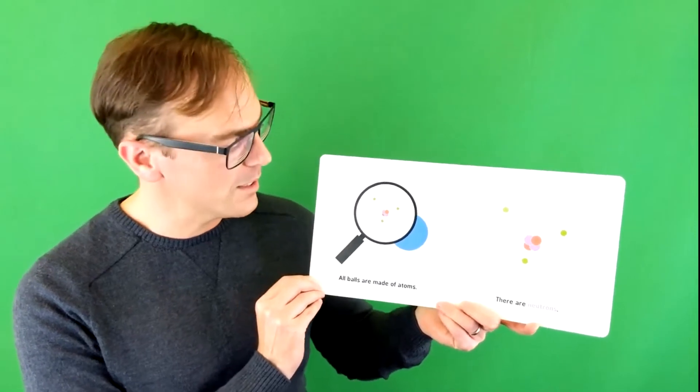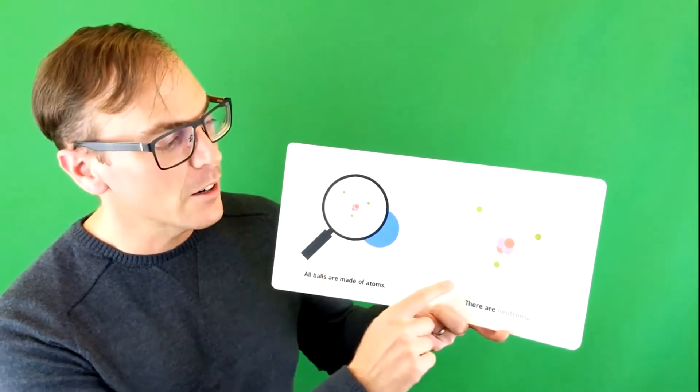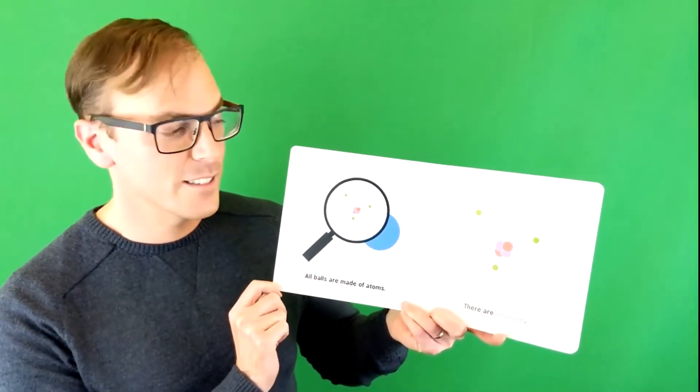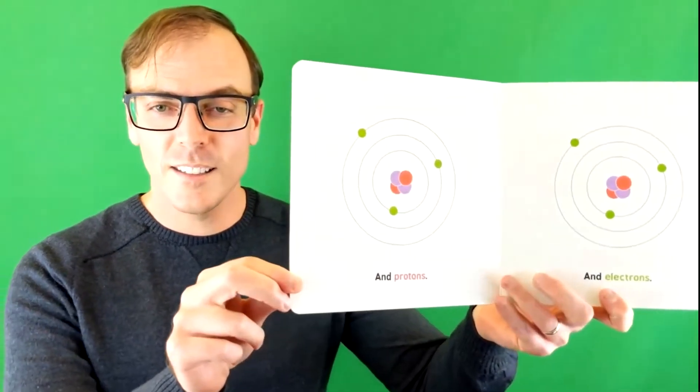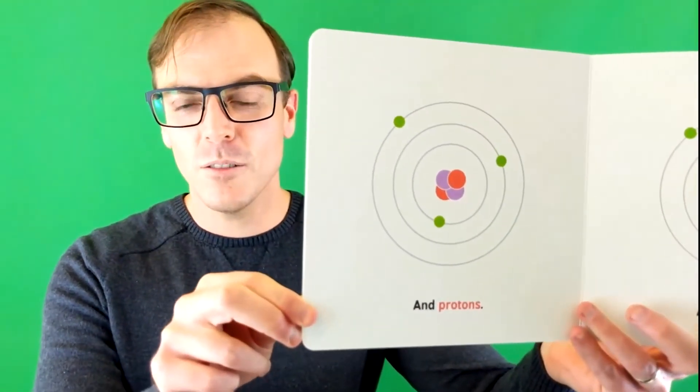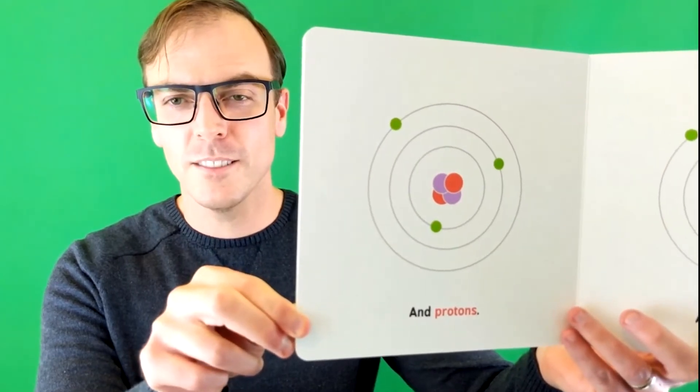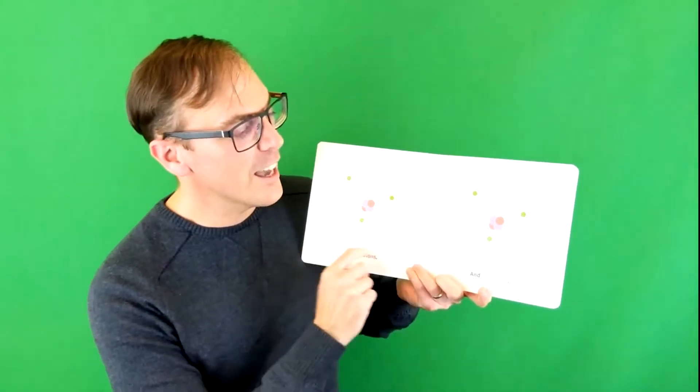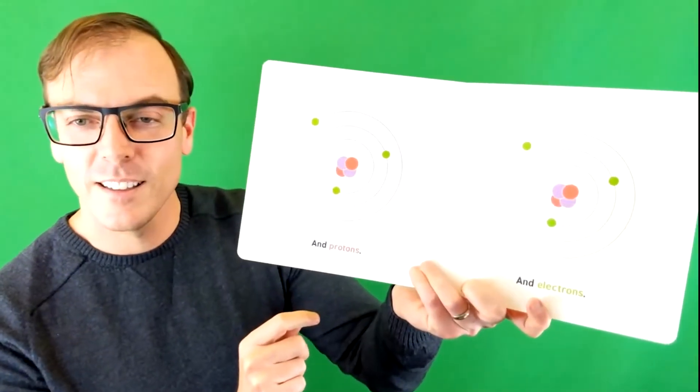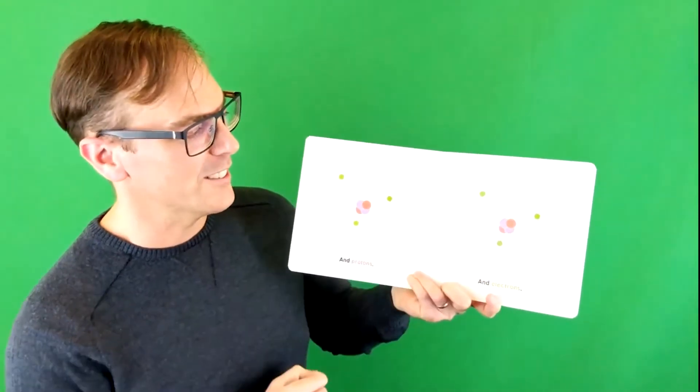But all balls are made of atoms. There are neutrons and protons and electrons. Okay, children. Can you point to the protons? Just touch your screen. Go ahead. Very good. And electrons. The electrons, they're out there having all of the fun. Look at those little electrons.